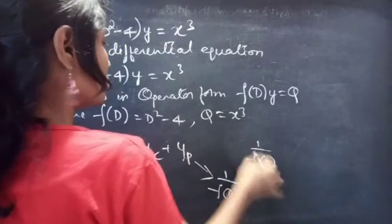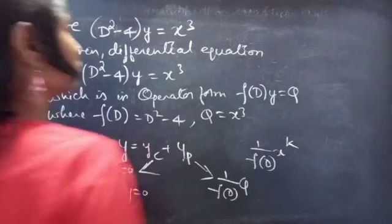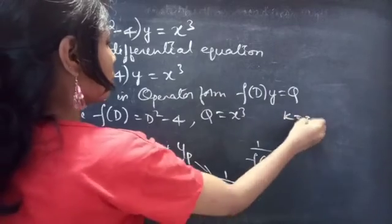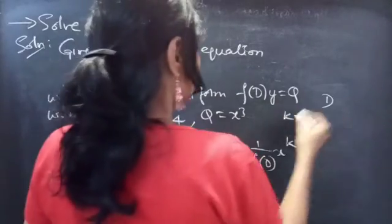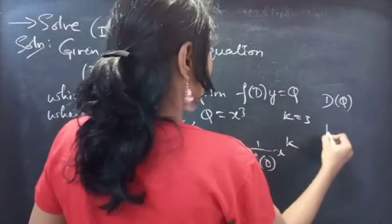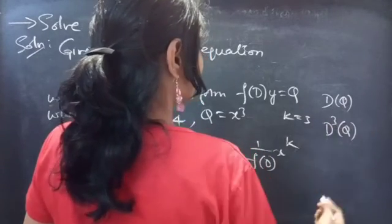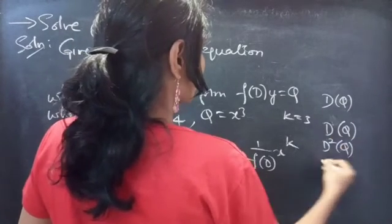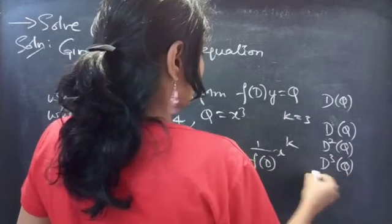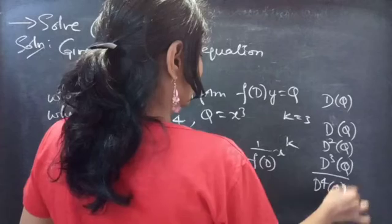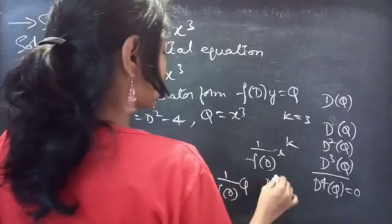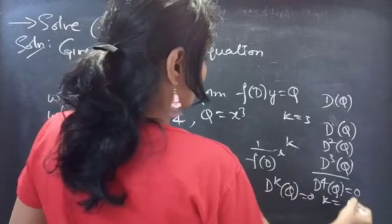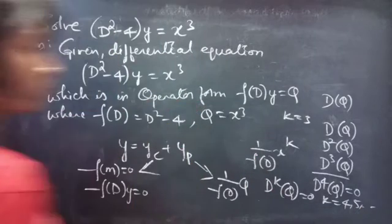Here Q is of x to the power k form. Compare x to the power k with x cubed, so k equals 3. We will get derivatives of Q till D cubed. From D to the power 4 of Q onwards, we will get value 0. In general, D to the power k of Q is 0 for k equals 4, 5, and so on. We will see this later.